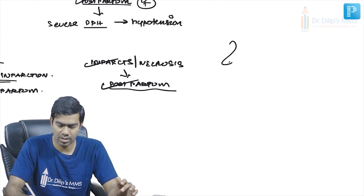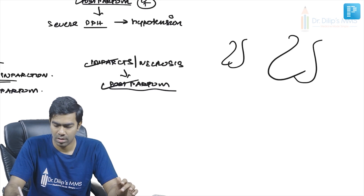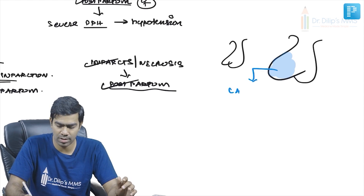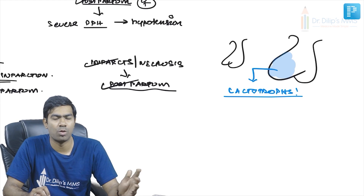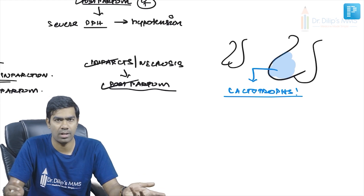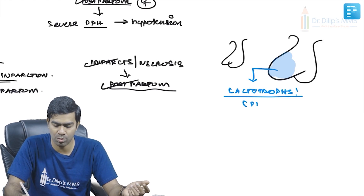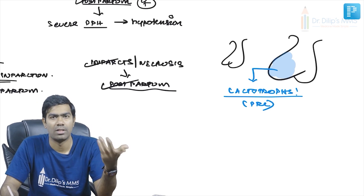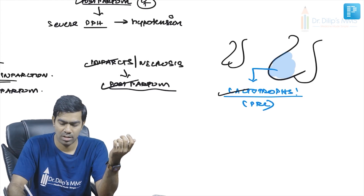In the postpartum period, there is hypertrophy of the anterior pituitary, particularly the lactotrophs (mammotrophs). These cells undergo serious hypertrophy during the peripartum period and third trimester because they must secrete prolactin to produce breast milk for the newborn.